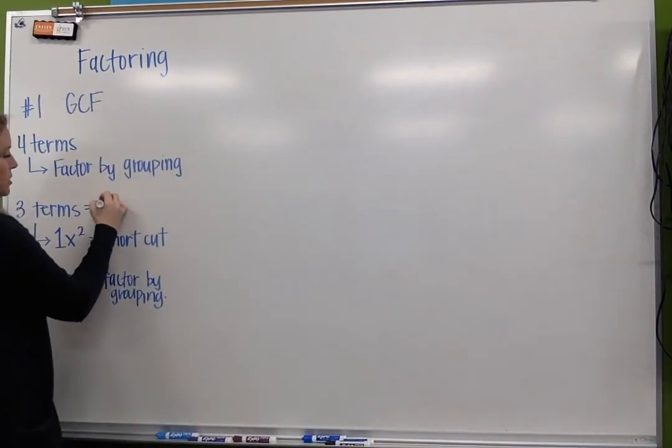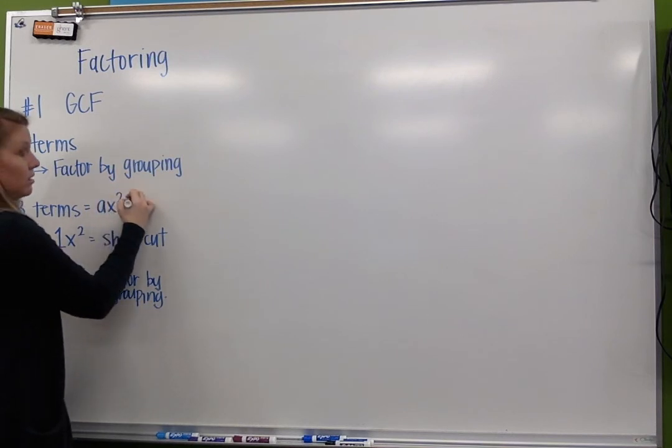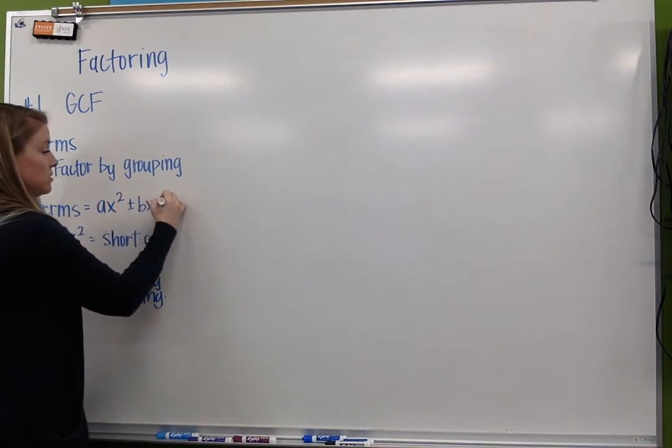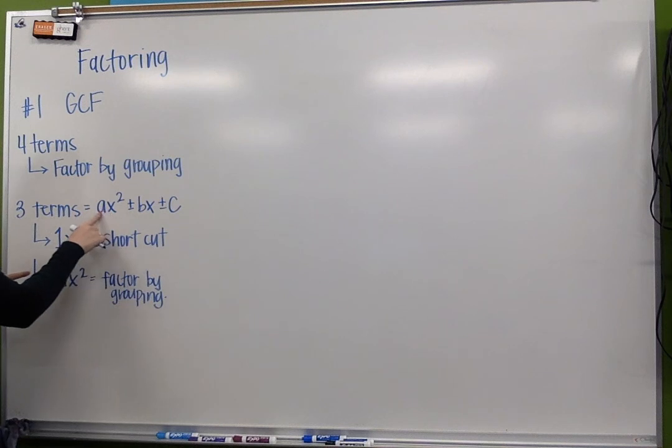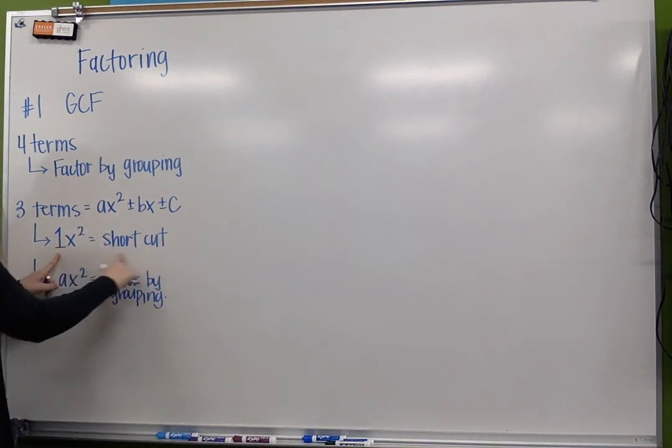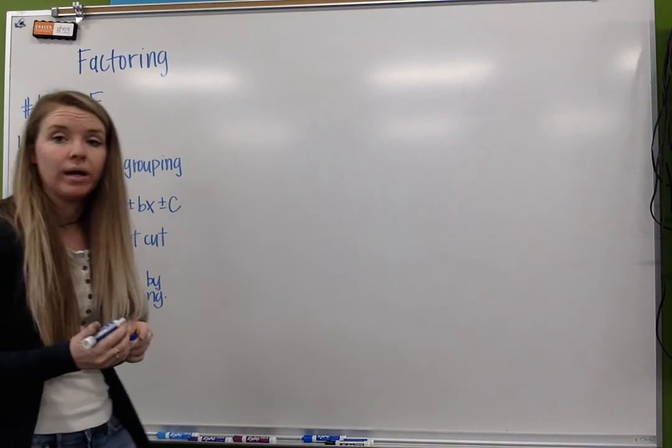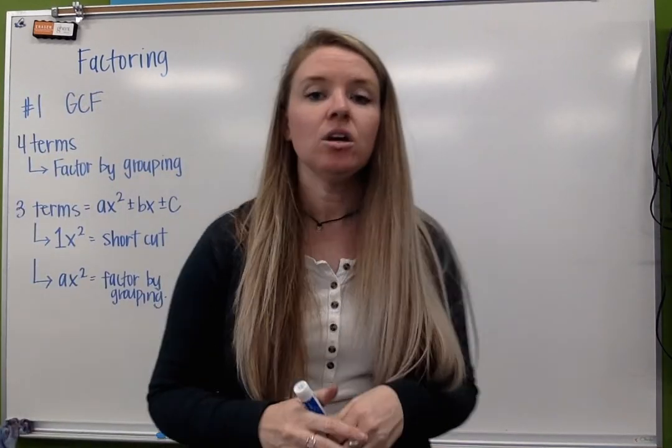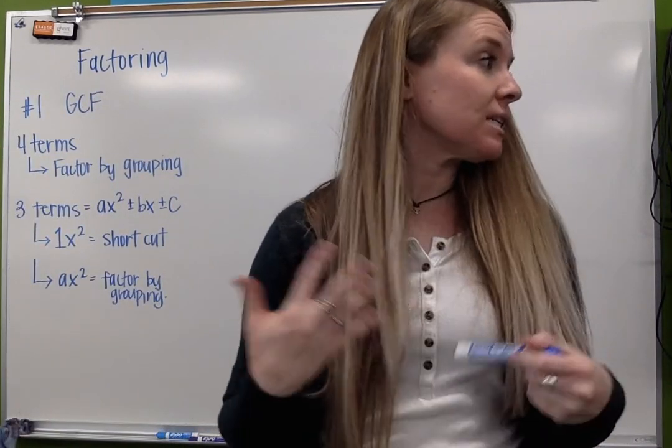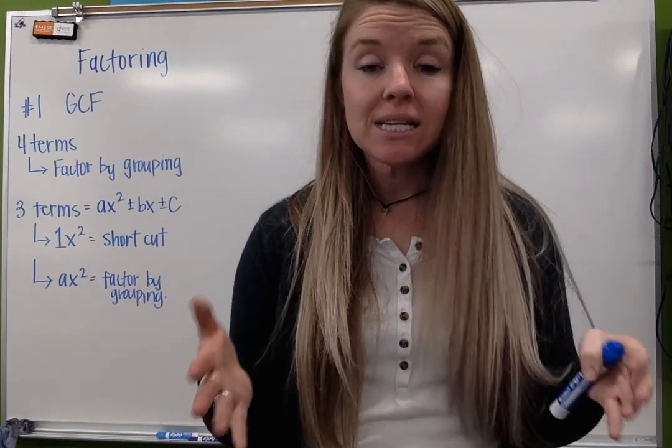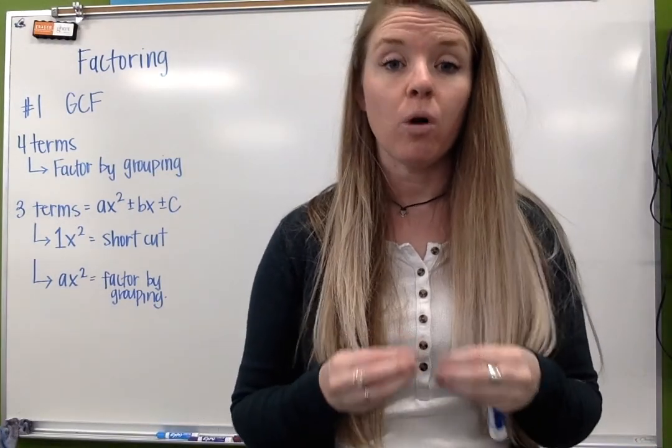So this three terms is our ax² plus or minus bx plus or minus c. When a equals one, we can use that shortcut. But what happens when a doesn't equal one? That's what we're going to look at today. So we're going to go through a couple of examples explaining the process. The process doesn't really change a whole lot from what we already know.